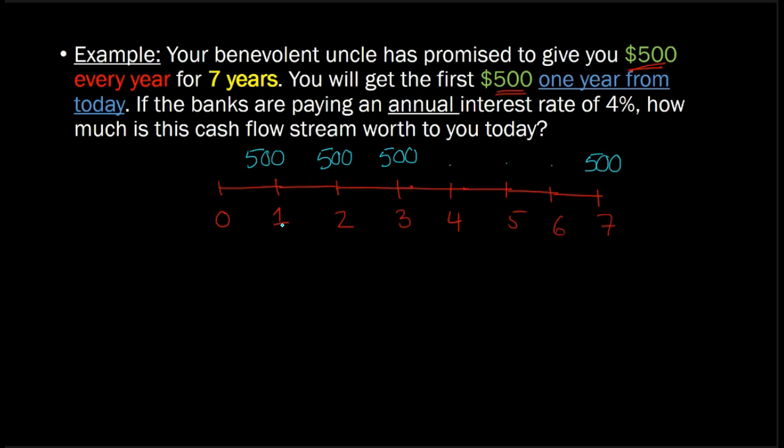And the last thing, perhaps the most important thing that makes an annuity, is that an annuity only lasts for a certain number of time periods, or in this case, a certain number of years. So this is an example of what we can call a seven-year annuity because you are going to be receiving the seven $500s over the next seven years.